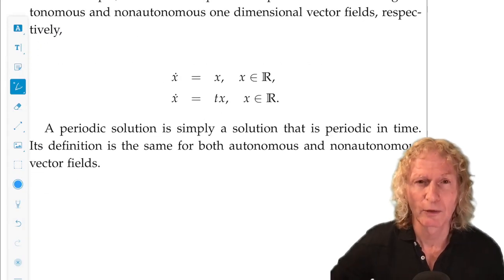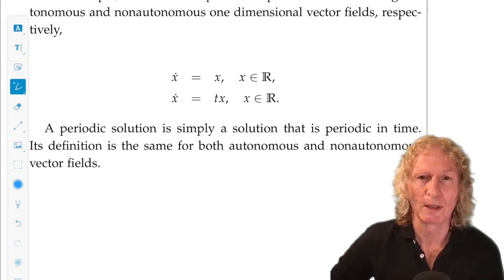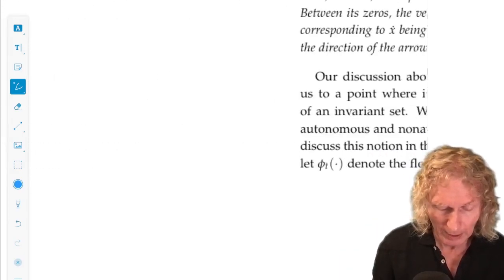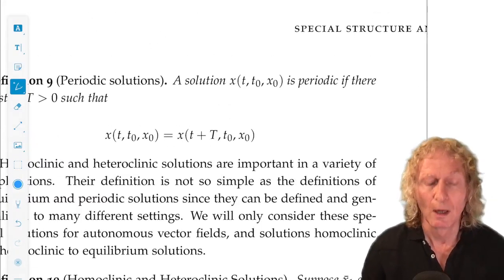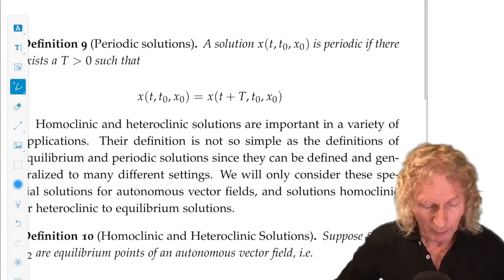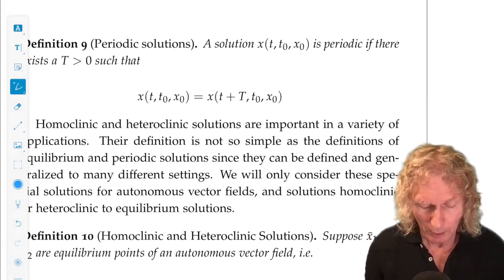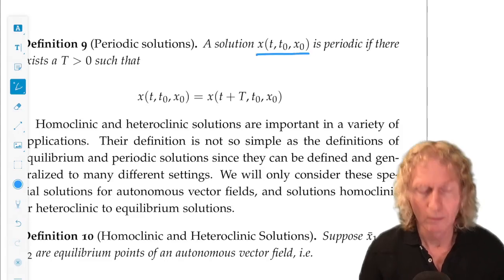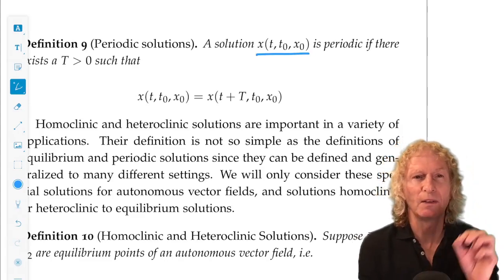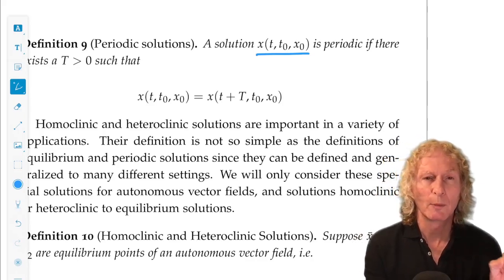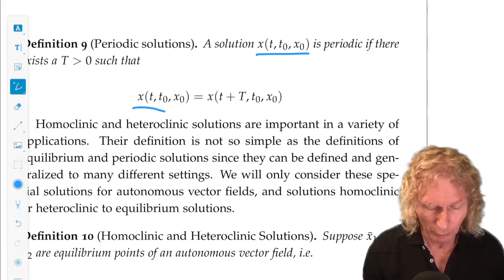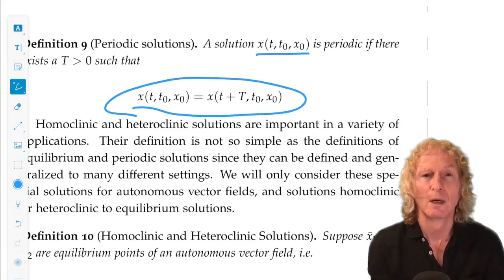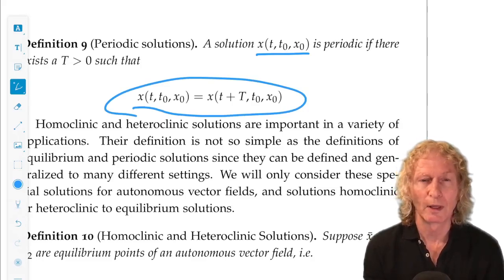Okay, now, periodic solution is what you think it might be. It's a solution that is periodic in time. And we can have the same definition for both autonomous and non-autonomous systems. So we have a solution, and it's periodic if we can find some constant uppercase T positive so that the solution repeats itself after that period has elapsed.